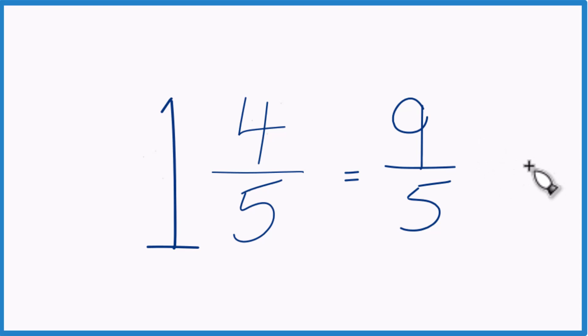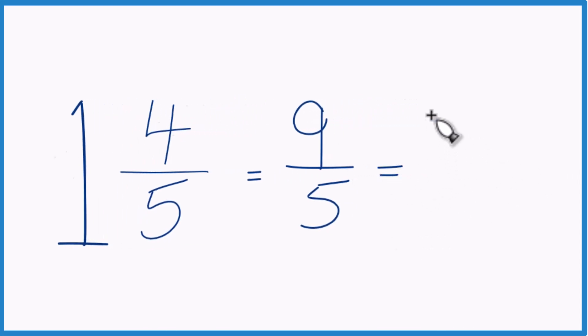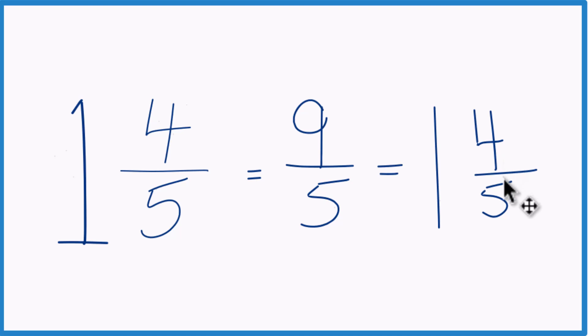We can even check our work here because 5 goes into 9 just one time with 4 left over. Bring the 5 across and we end up with 1 and 4 fifths.